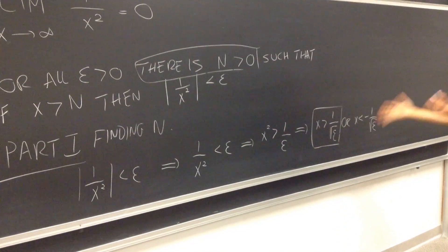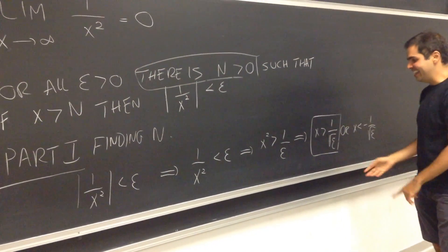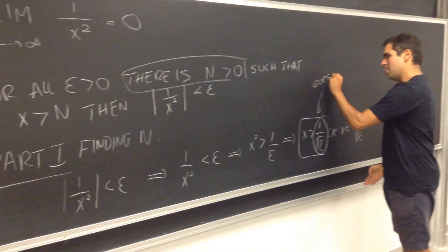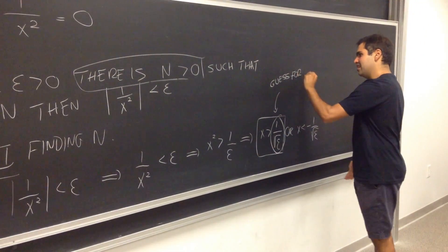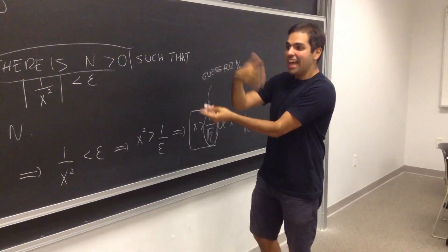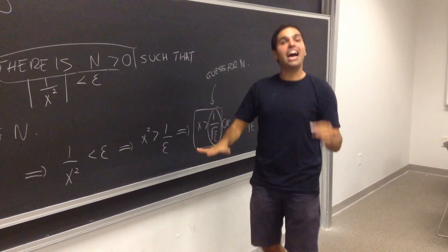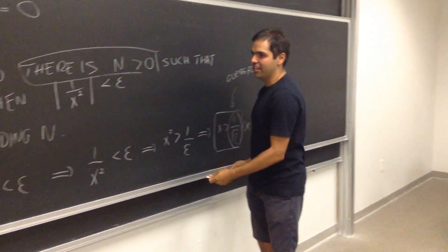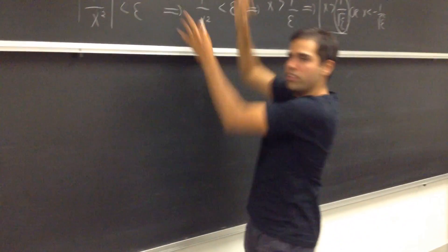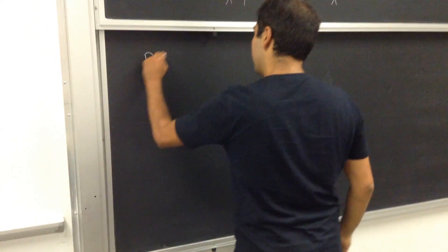So, this gives us a good guess for what N is. So, this is our guess for N. Guess for N. And again, this part is non-rigorous, because we just want to have a guess for this N, but now we get to the rigorous part. So, part two is our actual proof. So that was our scratch work. Now we have our proof.